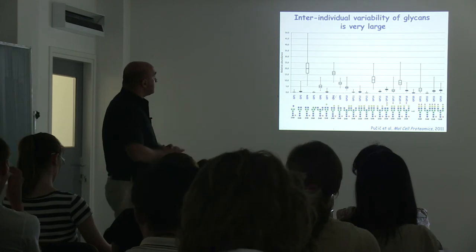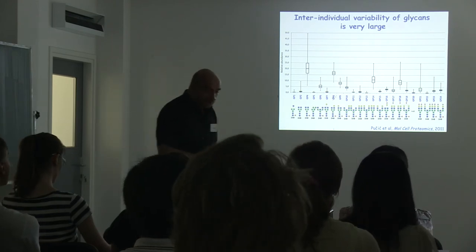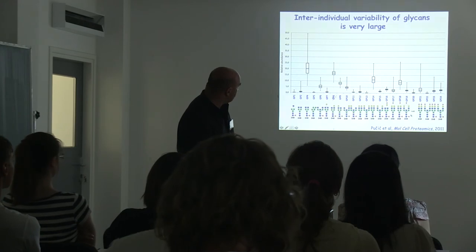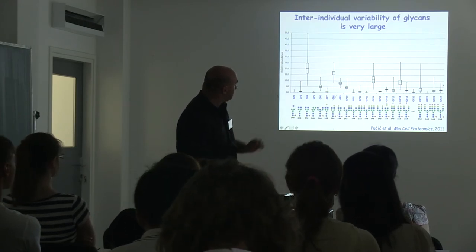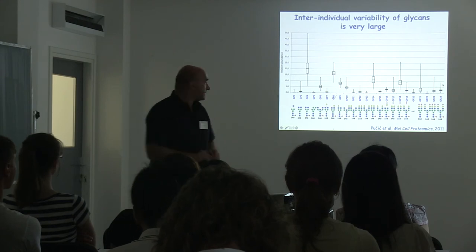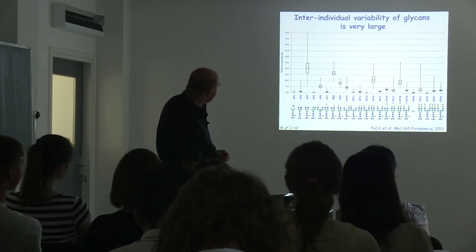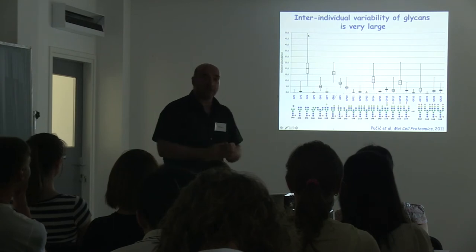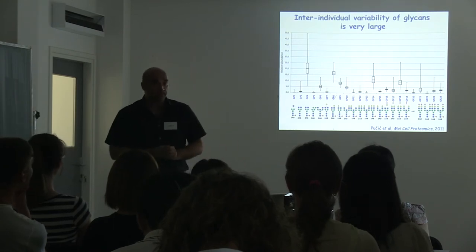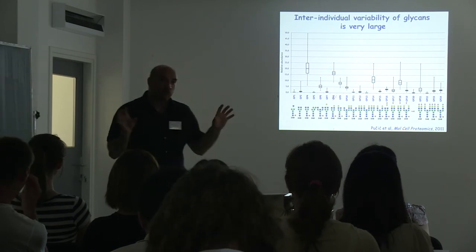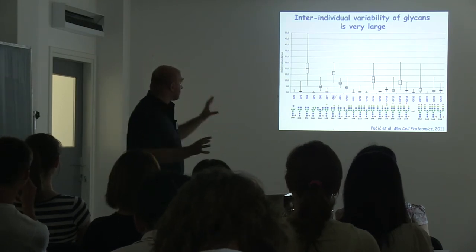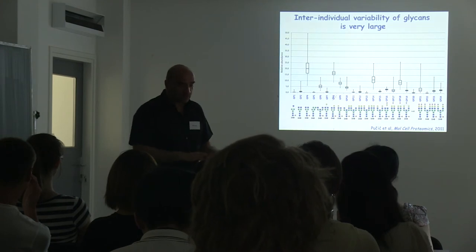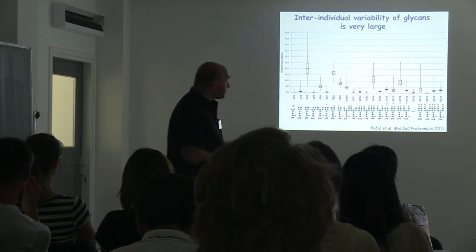This is the variability of glycans in a general population — the IgG glycome. You can see that for one very pro-inflammatory glycan, some people have 5% of the total glycome while other people have 50% of that structure. Functionally this is very important. But if you randomly select a few people, just because of natural variation you may have differences between groups. You have to have relatively large studies and replications.